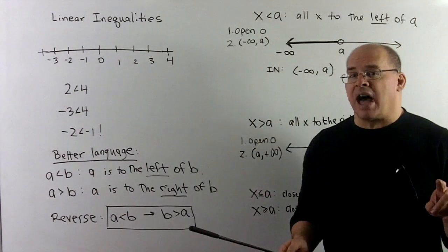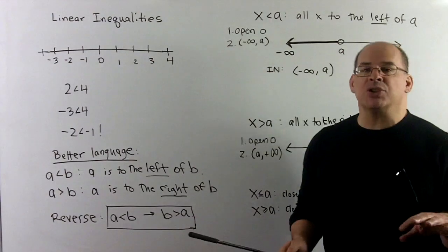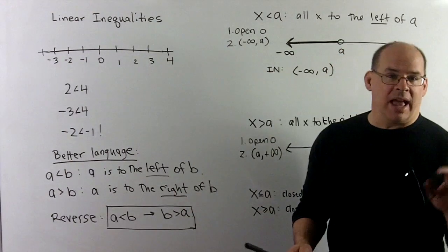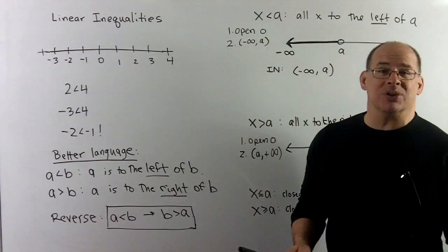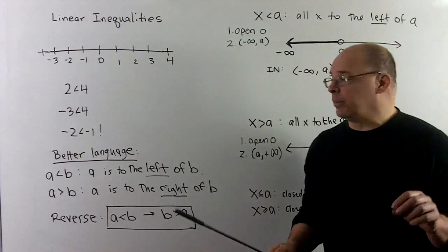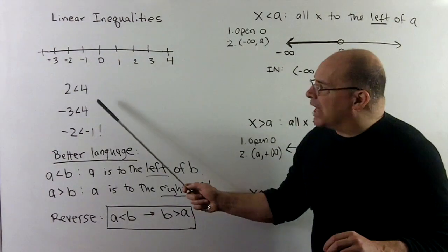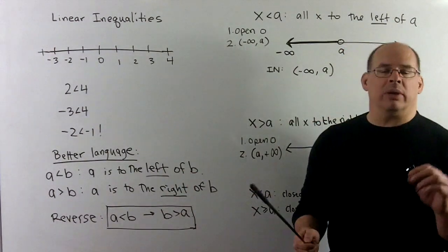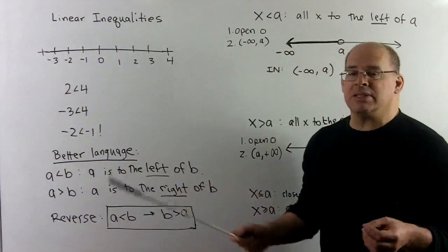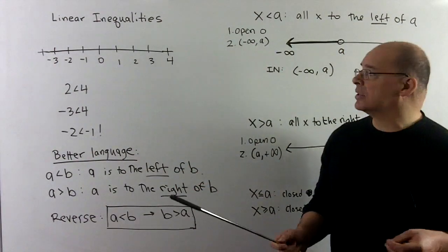Before we can get into solving the problems we're interested in, we first have to sort out the real number line and greater than or less than when we use negative numbers — that's going to be a common sticking point. If I say 2 is less than 4, we have no problem with that. That's clear: if I have 4 things, that's more than 2 things.